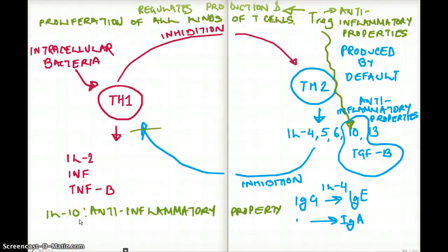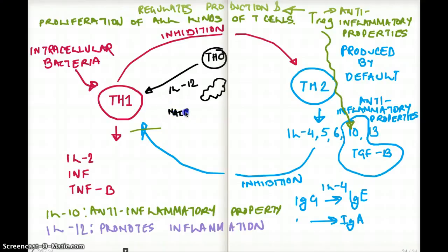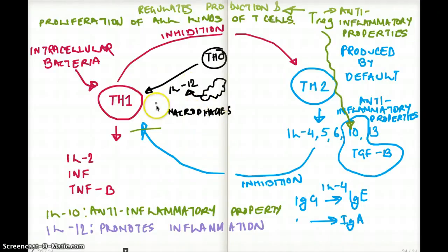If IL-10 suppresses inflammation, what interleukin promotes inflammation? That is IL-12. IL-12 is made by macrophages. These macrophages making IL-12 also promote the production of T helper 1 cells. So macrophages promote inflammation because they secrete IL-12, which makes more T helper 1 cells, which in turn makes more IL-2, interferon gamma, and TNF-beta — and IL-12 itself also promotes inflammation. They are all related.